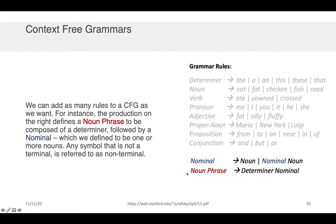Now we can add as many rules as we want to a context-free grammar, far beyond just the lexicon. For instance, the production on the right defines a noun phrase to be composed of a determiner and a nominal, which we define to be one or more nouns.